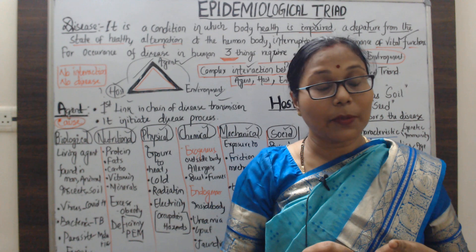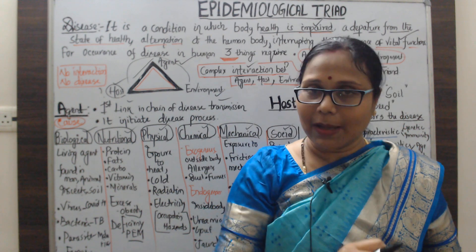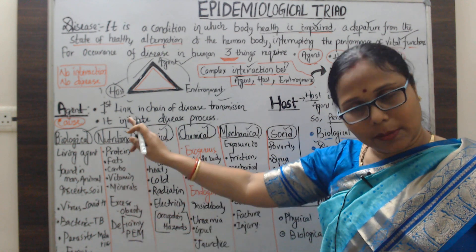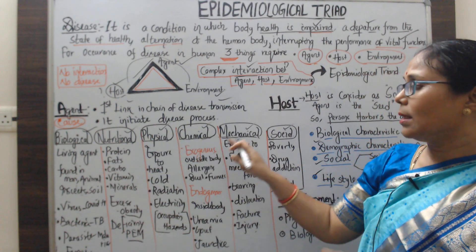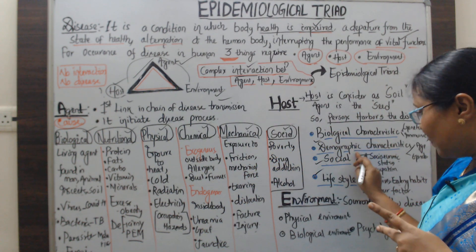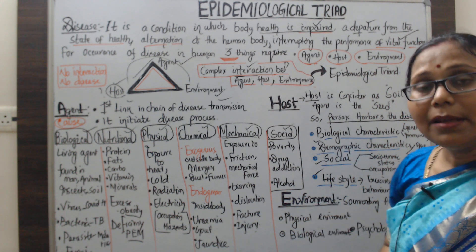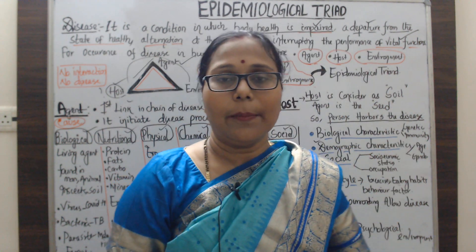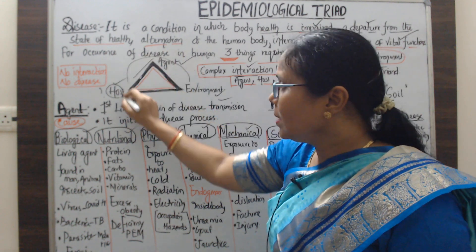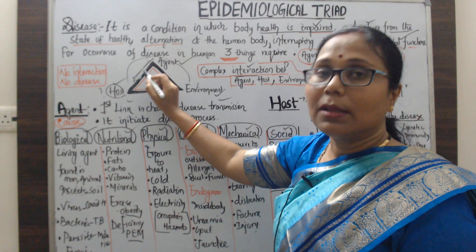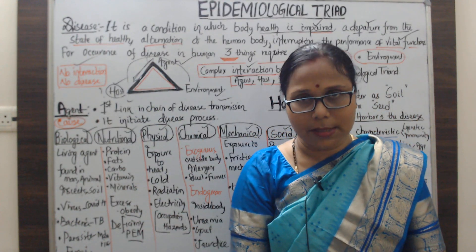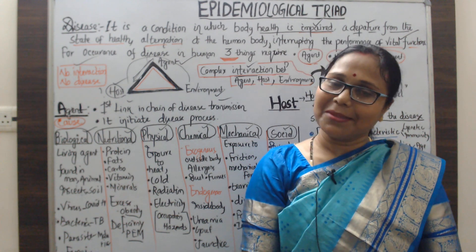To summarize the epidemiological triad: three important things are the agent, the host, and the environment. The agent may be living or non-living and is classified as biological, nutritional, physical, chemical, mechanical, and social. The host is characterized by biological, demographic, social, and lifestyle factors. The environment is classified as physical, biological, and psychosocial. The interaction between agent, host, and environment causes disease; if there is no interaction, there is no disease. Thank you for watching, please keep on subscribing.